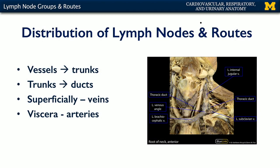Here we can see the lymphatic duct ascending the thoracic cavity through the root of the neck into the neck, and then it loops around before joining the left venous angle.